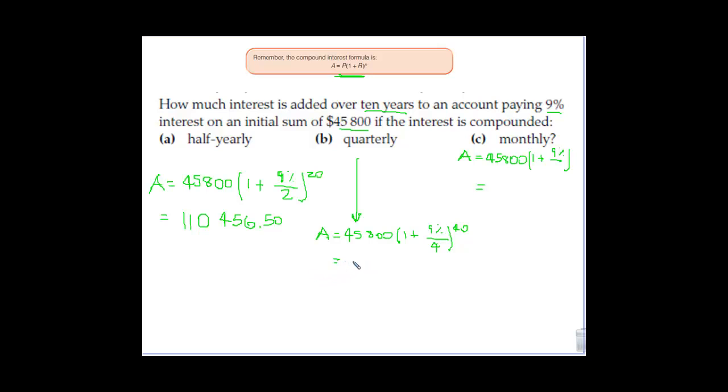Putting that all into the calculator, that gives us $111,531.45. So that's what that one would grow to. It's a little bit better if we compound it quarterly, which makes sense because we're compounding more times at the same interest rate. Basically, the more times you compound it, the better.